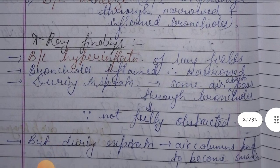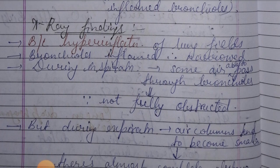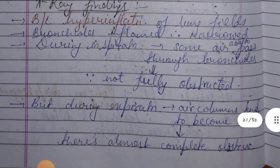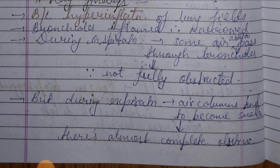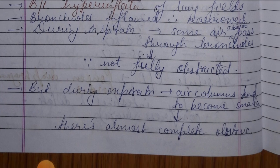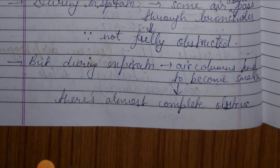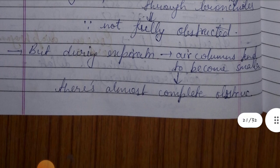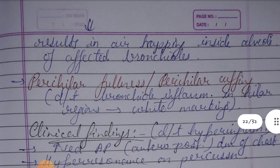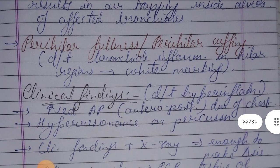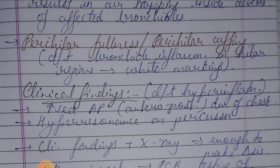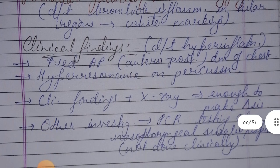X-ray findings show bilateral hyperinflation in the lung fields. The bronchioles are inflamed and narrowed, so at the time of expiration air can pass through the bronchioles but not completely. Due to air trapping and almost complete obstruction, you also see perihilar fullness or perihilar cuffing, indicating bronchial inflammation in the hilar regions.